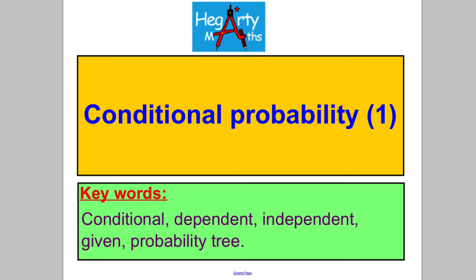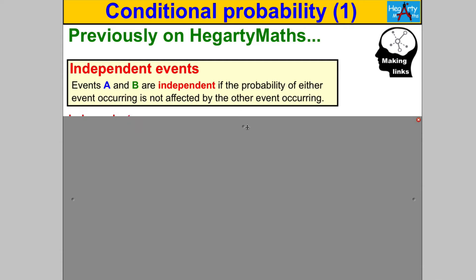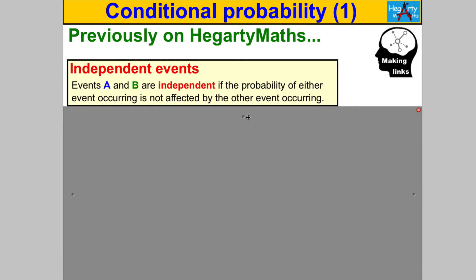Welcome to another video from HegartyMaths. In this video we're talking about conditional probability. Let's start with something we should already know. Previously on HegartyMaths we've talked about independent events — pause the video and double check you can remember what that means. We said that two events A and B are independent if the probability of either event occurring is not affected by the other one occurring.